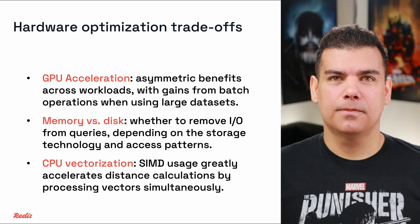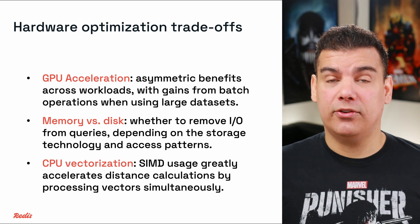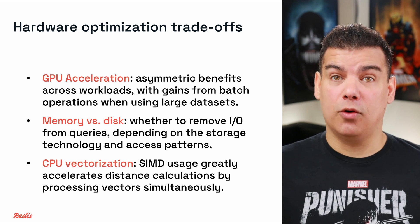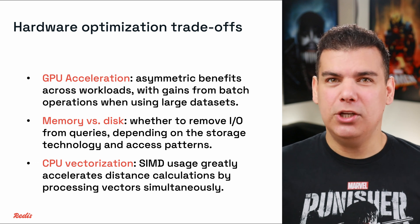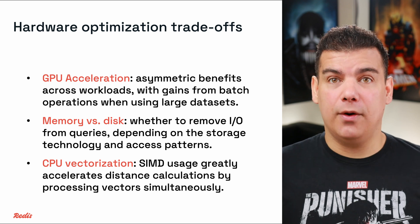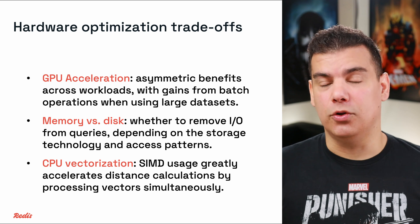The other technical consideration you must evaluate is hardware optimization. It's about matching your computing resources to the specific demands of vector search. The physical infrastructure you run your database on dramatically affects performance outcomes, and the hardware choices directly impact performance with clear technical trade-offs. The first trade-off has to do with GPU acceleration, which provides asymmetric benefits across workloads. The performance gain is most significant for batch operations and large datasets, with diminishing returns for individual queries due to data-transfer overhead. The speed-up varies widely based on the specific operations and implementations of your use case.